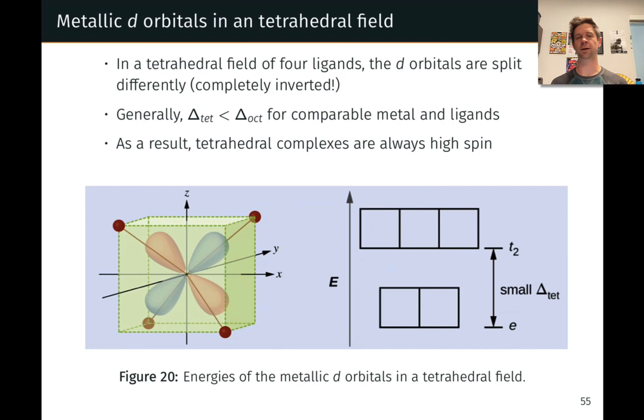So let's start with the tetrahedral geometry. The arrangement or the way the d-orbitals are split by a tetrahedral field is different from that of an octahedral field because the geometry of the ligands, the geometries of those negative point charges, are different with respect to the d-orbitals.